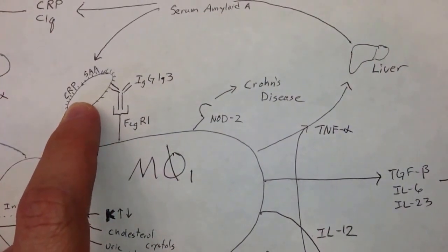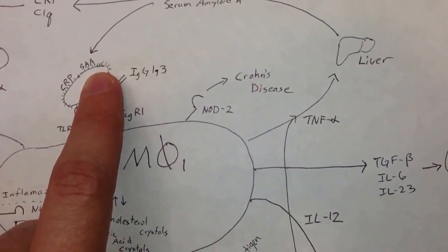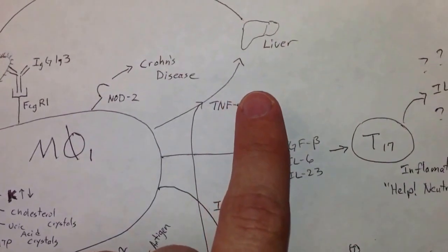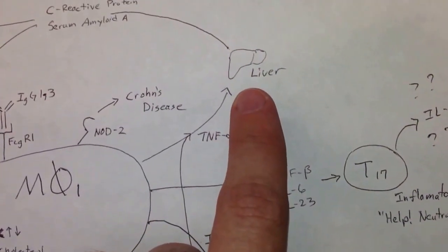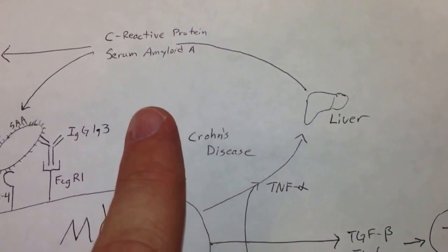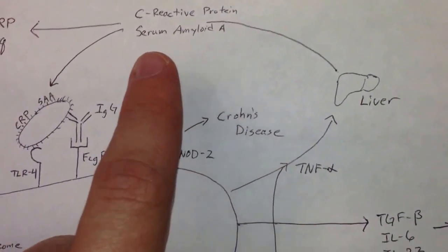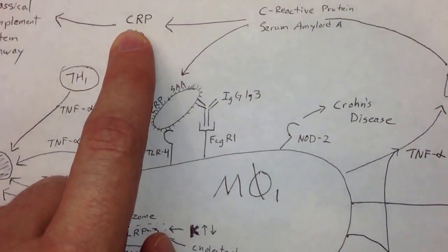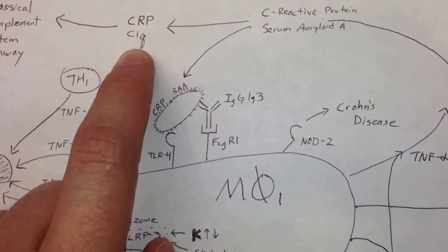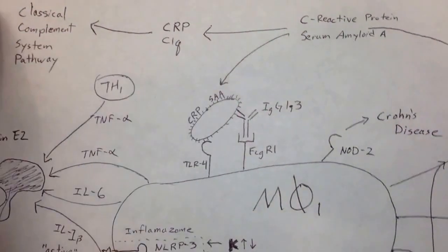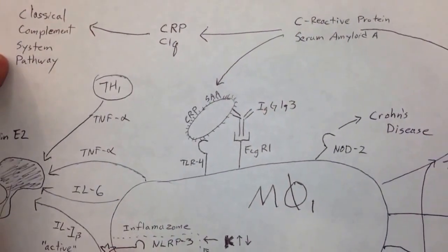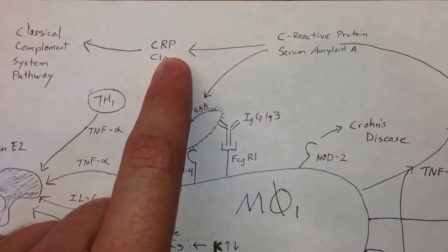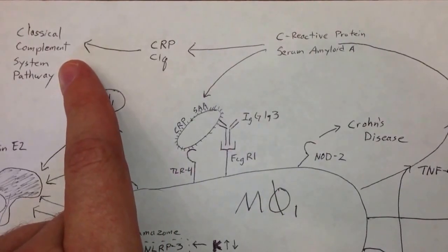And it's also been opsonized by CRP and SAA. How did that happen? Well, the macrophage here secreted tumor necrosis factor alpha, which went to the liver. And the liver then secreted C-reactive protein and serum amyloid A, which opsonized the bacteria. CRP, C-reactive protein, can also join up with C1Q from the complement cascade and activate the classical complement system pathway. Normally, C1Q would require an antibody, but CRP can take the place of an antibody and activate the classical complement system.